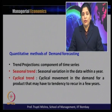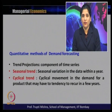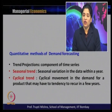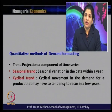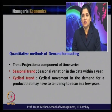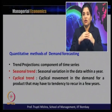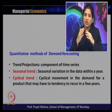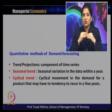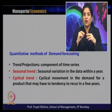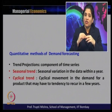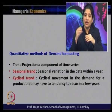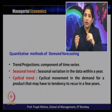The second component is seasonal trend — seasonal variation in the data within a year. For example, the demand for ice cream is high in summer and comparatively low in winter and rainy season. Similarly, for winter garments, demand is more in winter and less in summer. If it is a seasonal product, the variation appears in the data within the specific season when the product is generally used.